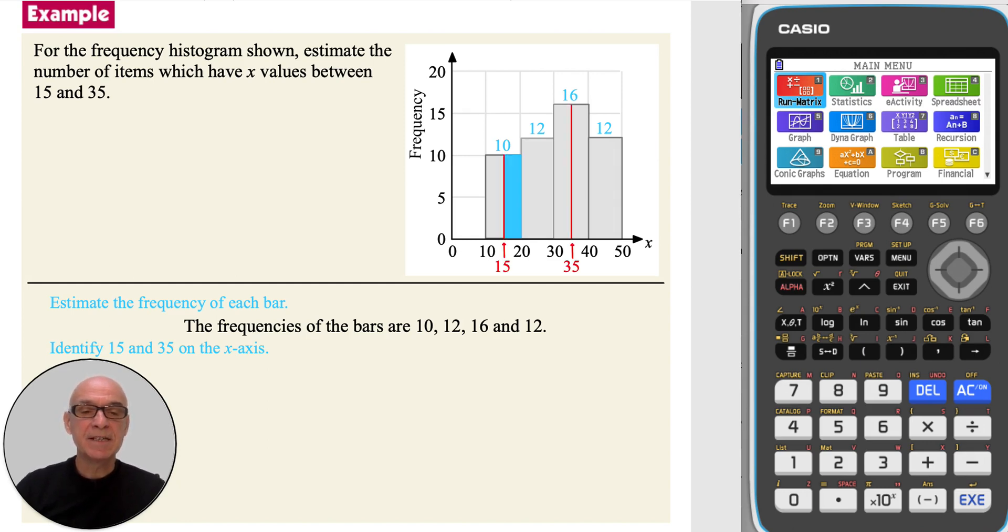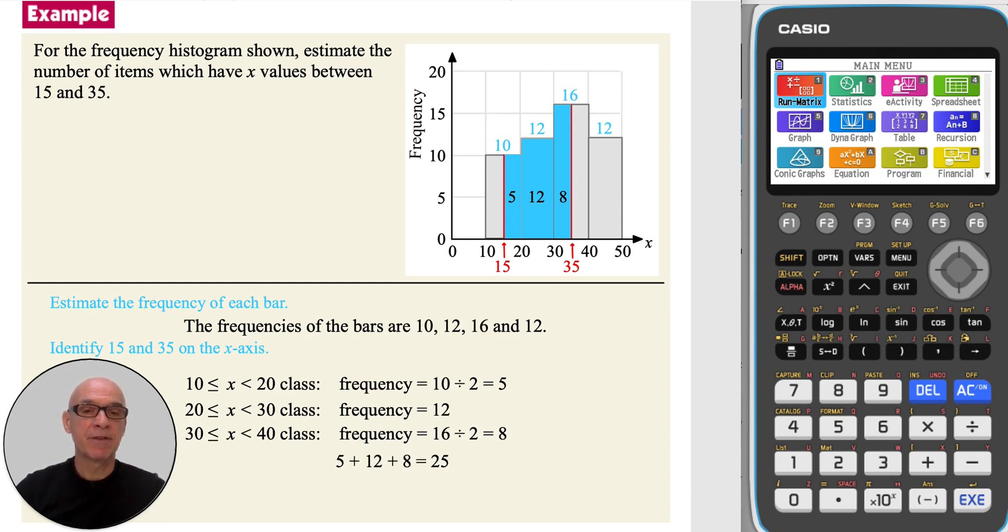15 is midway across the 10 to 20 class. So, we estimate that half of that frequency will be between 15 and 20, which is 5, as shown. All of the 12 x-values in the 20 to 30 class are between 15 and 35. And since 35 is midway between 30 and 40, we estimate that half of the 16 x-values in that class are between 30 and 35, and that's equal to 8, as shown. Adding the three frequencies gives the value shown. So, we estimate that there are 25 items between 15 and 35.